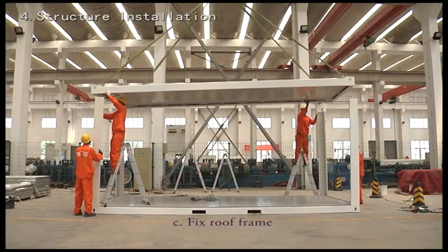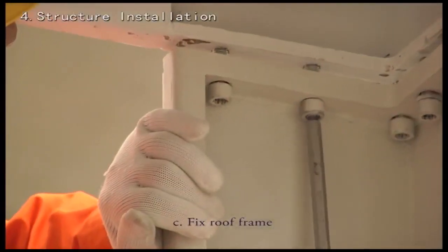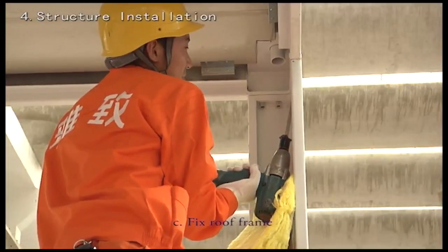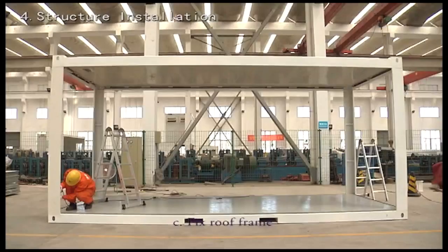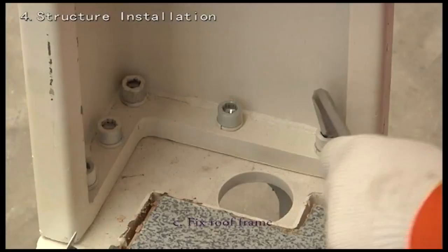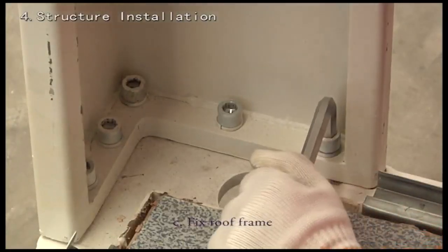Fix roof frame. Position the roof and fix corner posts by using fastening bolts. Finally tighten all bolts of roof and floor frame by manual wrench. Now the frame is fully assembled and the wall panels can be put in.